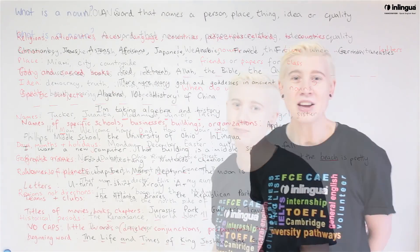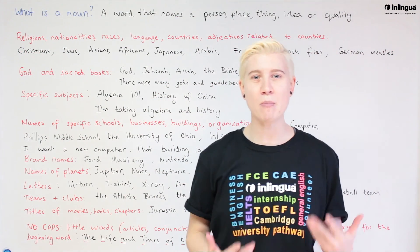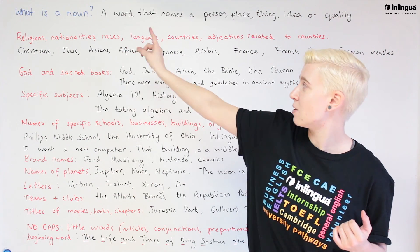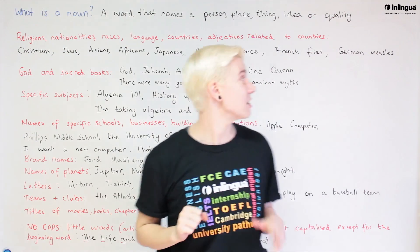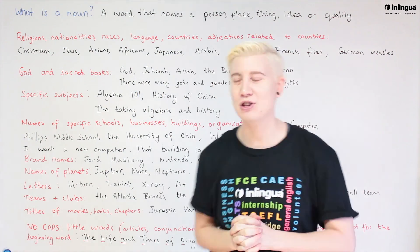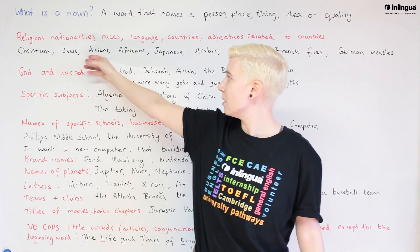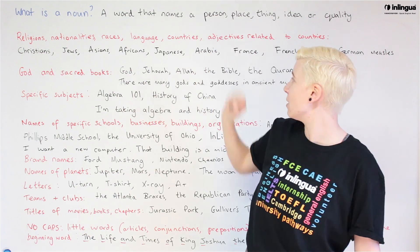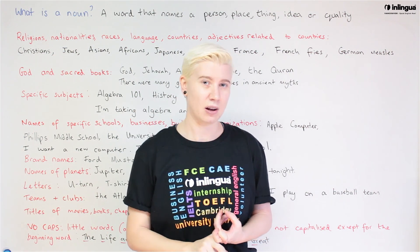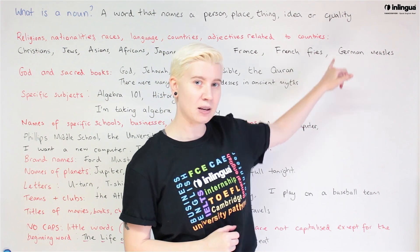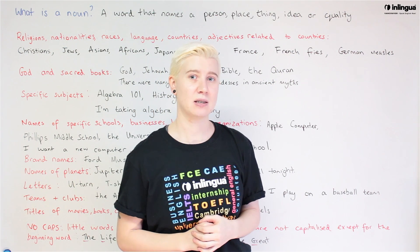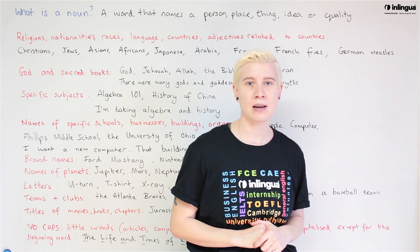Continuing with nouns — our next section is religions, nationalities, races, language, countries, and adjectives related to countries. Religions, for example: Christians, Jews. Nationalities: Asians, Africans, the Japanese. A language like Arabic. A country like France. And then an adjective related to a country: French fries. Here we are describing the fries — French is acting as an adjective, but we still need to capitalize it. The same for German measles — it becomes part of the noun.